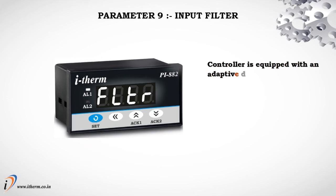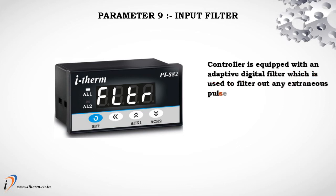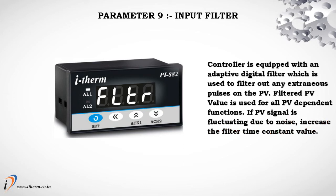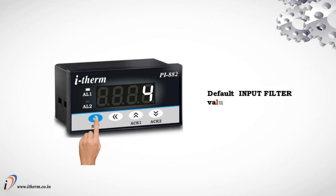Parameter 9: Input Filter. The controller is equipped with an adaptive digital filter used to filter out any extraneous pulses on the process value. The filtered process value is used for all process-value-dependent functions. If the process value signal is fluctuating due to noise, increase the filter time constant value. Default input filter value is 4.